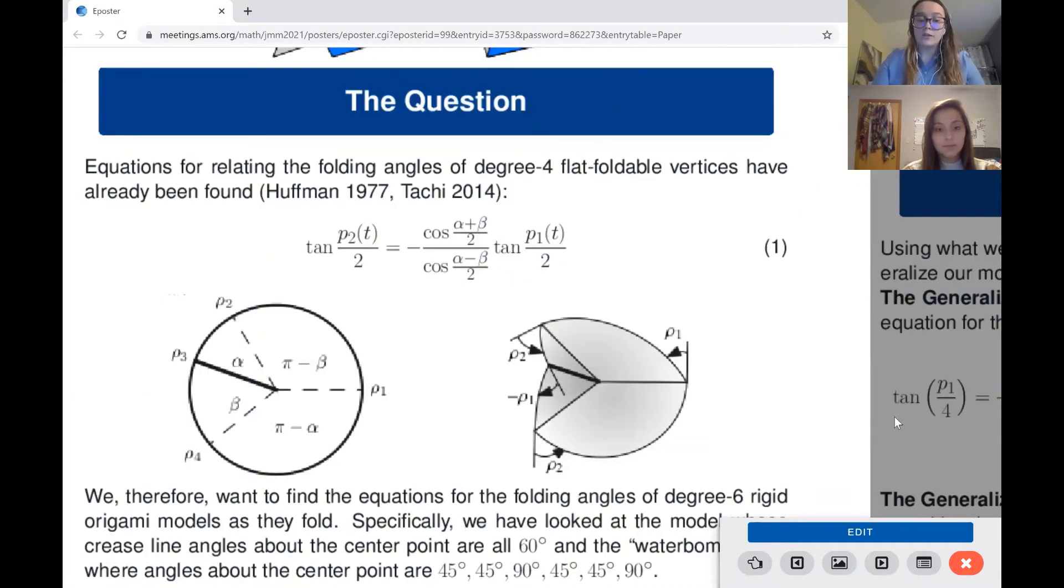First of all, we should note that researchers such as Huffman and Tachi completed work on a degree four flat foldable vertex. They found simple equations that relate the folding angles to their folding speeds over time. Basically, if folding angles are p1, p2, p3, and p4, they found linear relationships between the tangent of the folding angles over two as seen here in this model.